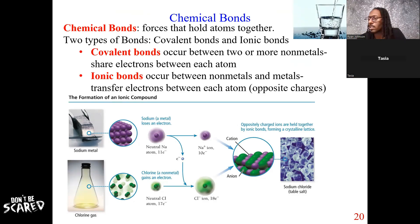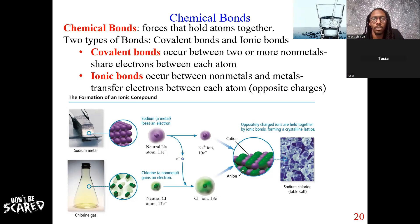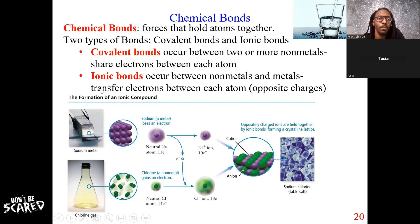Because a covalent bond is between two nonmetals, that means that they're sharing electrons. So we want to specifically understand that covalent bonds share electrons. Now, that's going to be different from ionic bonds. Ionic bonds are going to be between a nonmetal and a metal, but they're transferring electrons.